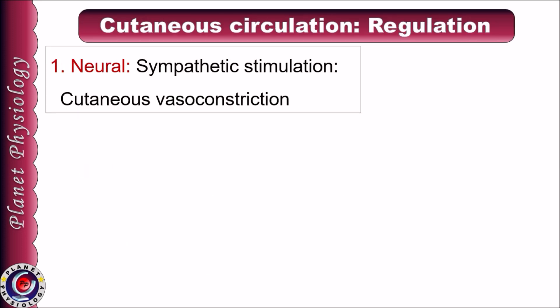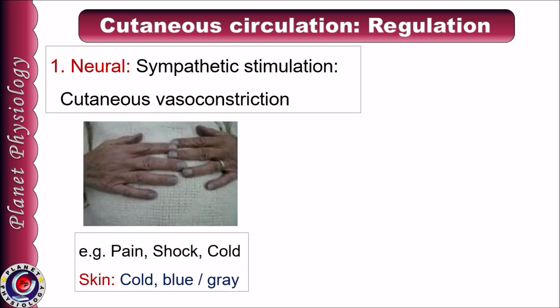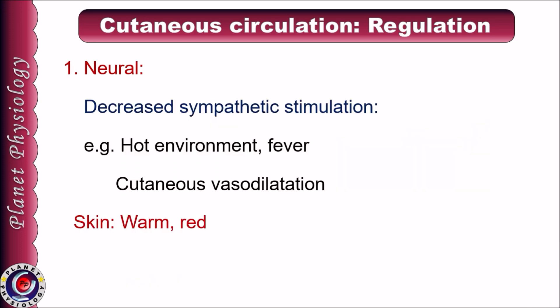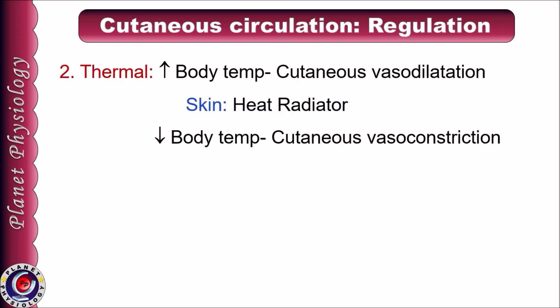Cutaneous vessels are richly innervated by sympathetic nerves, and sympathetic stimulation causes cutaneous vasoconstriction — commonly seen in response to pain, shock, or cold. However, in severe cold, superficial cutaneous vessels dilate to prevent frostbite, making skin appear ruddy or rosy red. When there is decreased sympathetic stimulation — as in hot climate or fever — there is cutaneous vasodilation and the skin becomes warm and red.